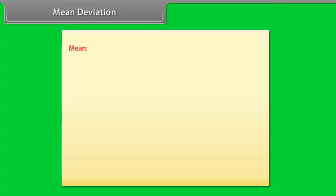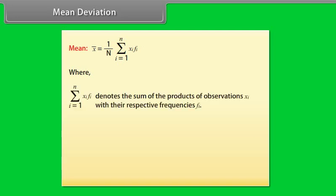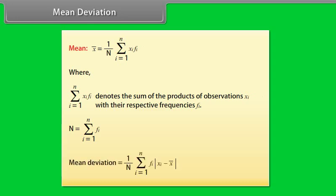Mean deviation about mean: First we find the mean using the formula: summation from i=1 to N of (Xᵢ × Fᵢ) divided by N, where N = summation of frequencies. Then we find the deviations of observations Xᵢ from the mean and take their absolute values. Finally, the mean deviation = summation from i=1 to N of (Fᵢ × |Xᵢ − X̄|) divided by N.